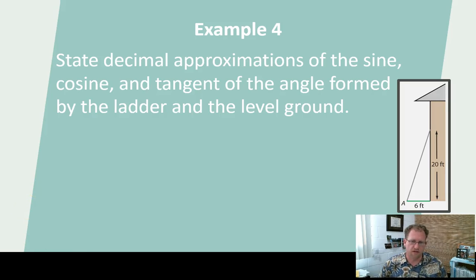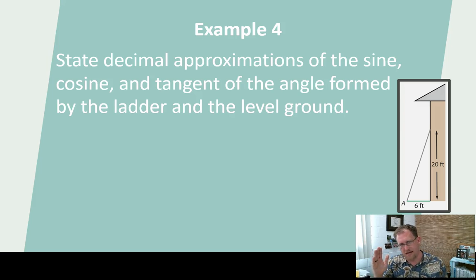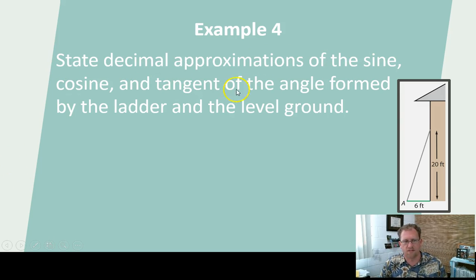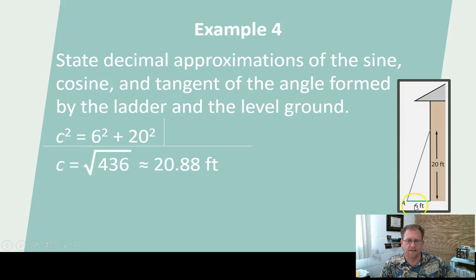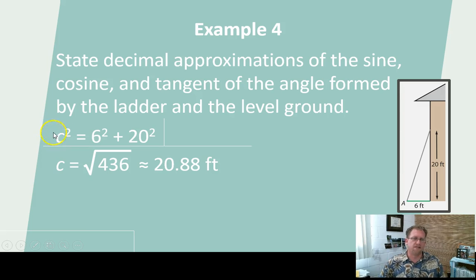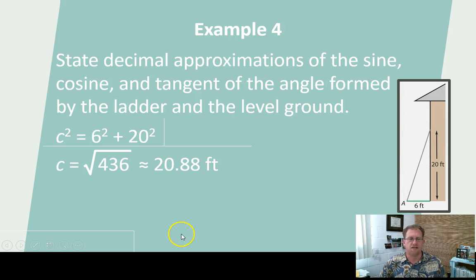Now we're going to take this to a real-world application. I've got a ladder that leans against a house. It's 20 feet up the house where the ladder contacts the house, and 6 feet out where the feet of the ladder rest on the ground. We're going to state the decimal approximations of the sine, cosine, and tangent of the angle formed by the ladder and level ground. First, use the Pythagorean theorem to calculate the length of the hypotenuse: C squared equals 6 squared plus 20 squared — 36 plus 400 equals 436. The square root of 436, as a decimal approximation, is 20.88 feet. So AC, the length of the hypotenuse, is 20.88 feet.